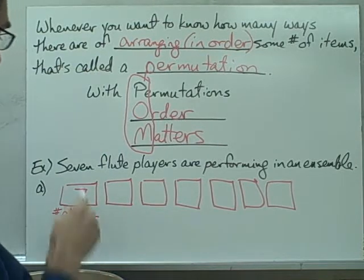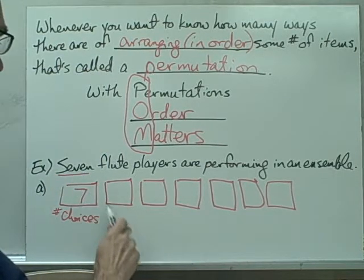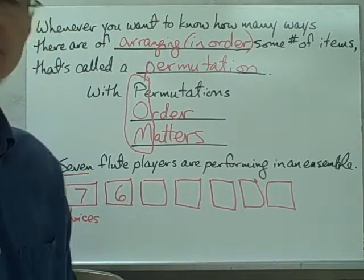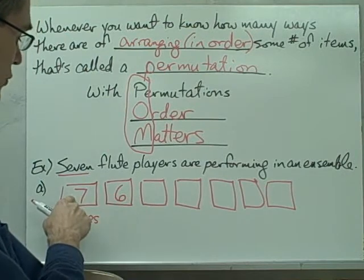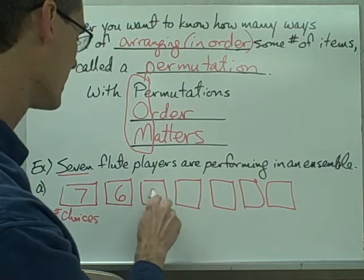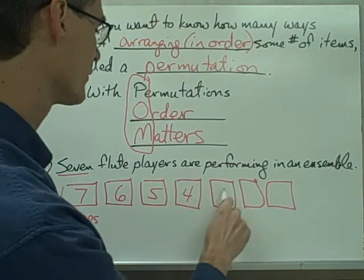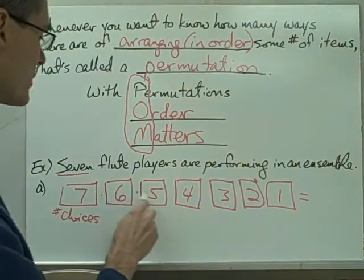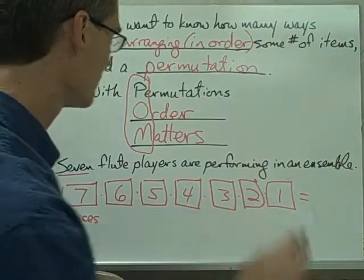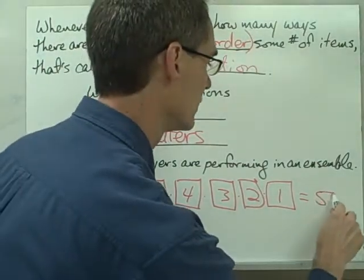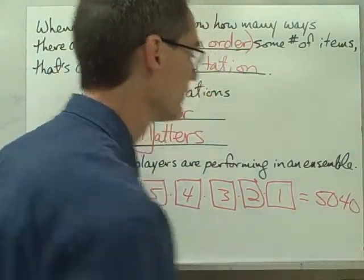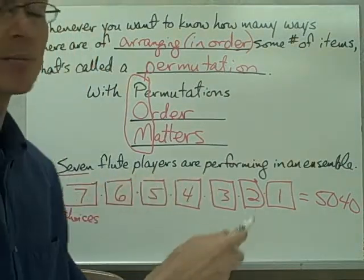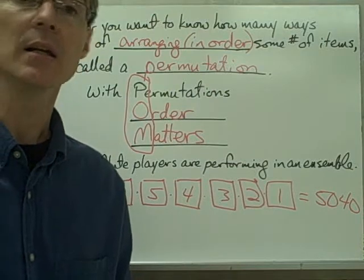I clearly have seven choices for the first slot. How many different choices for the second slot? Only six choices, because I already used one of my names in the first slot. And so on: five choices for the next spot, four for the one after, three for the next, two, and one for the last. Using the fundamental principle of counting, I multiply each of these numbers together and I get 5,040, which tells me there are 5,040 ways that these seven players' names could be arranged in the program.